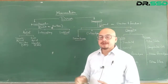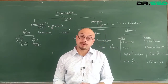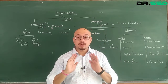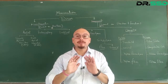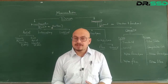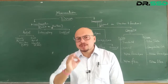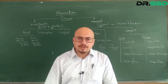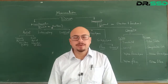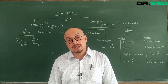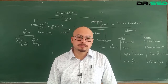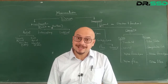The lateral meristem is present all along the boundary or the periphery of the stem. They are responsible for the increase in girth or the diameter of the stem, and thus the plant becomes woody and strong. This is a characteristic feature of trees.